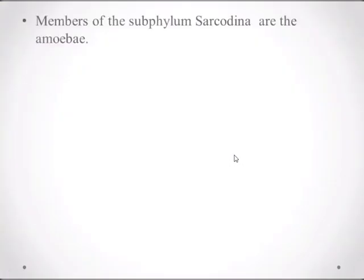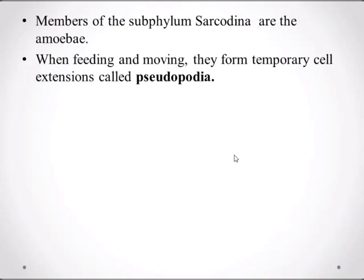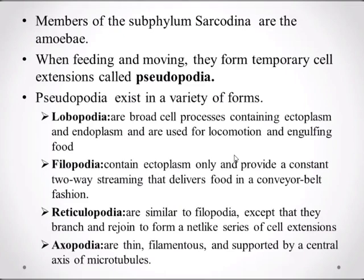The members of the subphylum Sarcodina are the amoeba. When feeding and moving, they form temporary cell extensions called pseudopodia. Pseudopodia exist in a variety of forms. The lobopodia are broad cell processes containing both ectoplasm and endoplasm, and are used for locomotion and engulfing food.